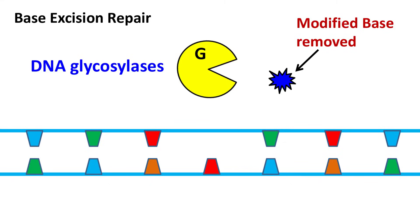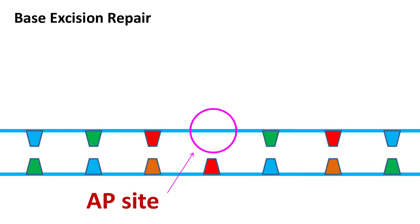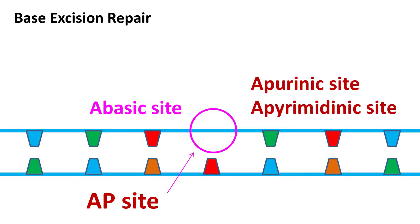The empty region in the DNA where the base has been removed is called an AP site. AP stands for abasic site, which means it is devoid of any purine or pyrimidine base. Sometimes it is also referred to as an apurinic or apyrimidinic site.